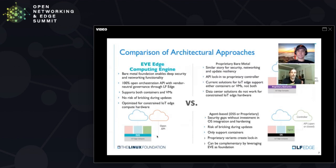That's important when you're in a legacy world where you've got some Windows applications that you want to put next to modernized cloud-native apps. EVE is focused on more constrained hardware — still has enough memory to support the abstraction, but a lot more constrained than a rack of servers you would see in a data center.